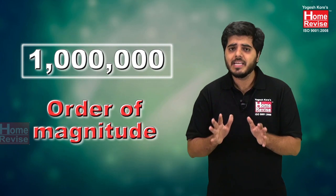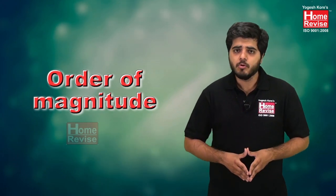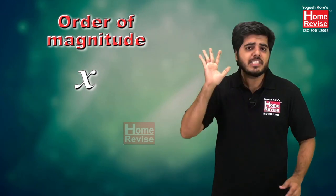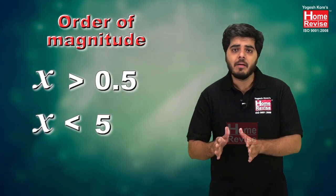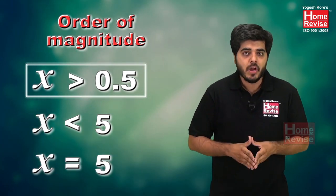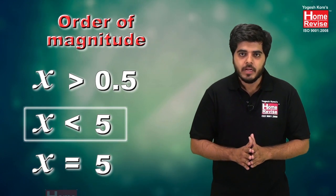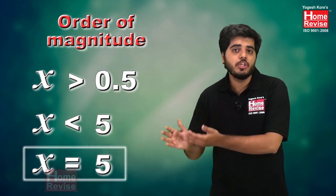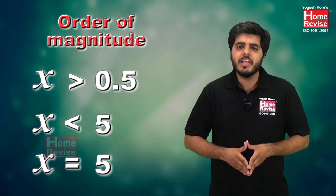I am going to tell you the basic concept of how to calculate the order of magnitude of a given quantity. The first basic rule is: if your value is x, then x should always be greater than 0.5 and less than or equal to 5. This is the required range of x.